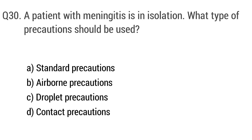Question number thirty. A patient with meningitis is in isolation. What type of precaution should be used? The right answer is option C: droplet precautions.